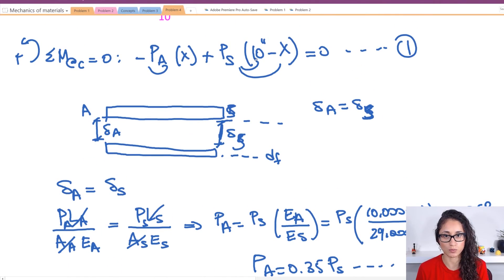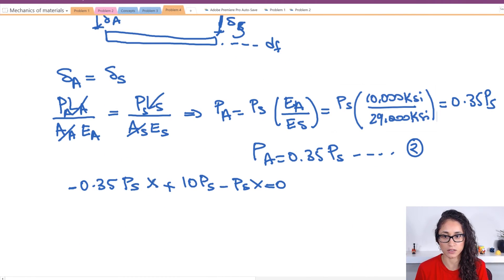So what I did I just multiplied this by this and this one by this one and don't forget the X here. So now I can sum this one with this one and then take it to the other side.